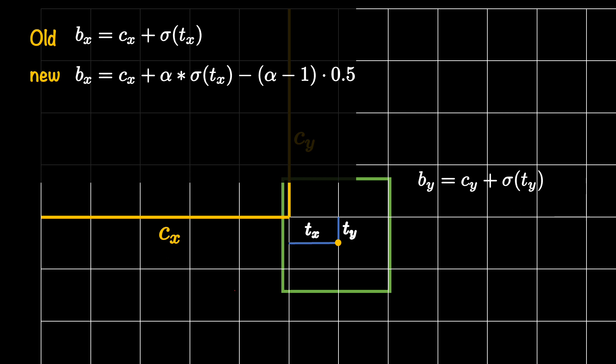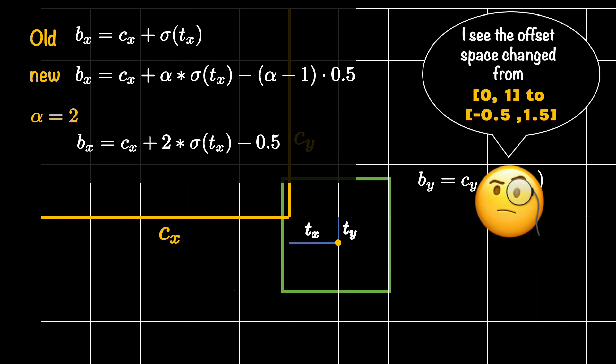And now if you pay attention, you can see that if I use alpha to be 1, then it gives me the old formulation. The third term will vanish because 1 minus 1 is 0 and the second term will come back to just sigmoid of TX. However, if you use the value of alpha to be 2, then the equation will simplify to CX plus 2 sigmoid of TX minus 0.5. Essentially by doing this, we have changed the offset space from 0 to 1 to negative 0.5 to 1.5.